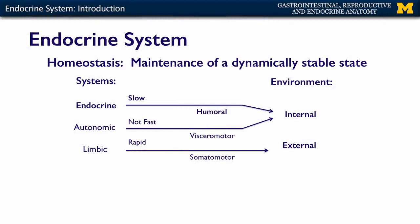In this part of the MOOC, we're going to discuss the endocrine system. The endocrine system is very important in maintaining homeostasis. Homeostasis is, by definition, the maintenance of a dynamically stable state. You're dynamic in that you're changing from moment to moment, but overall you're stable. Your blood pressure isn't going way up or way down, your temperature is not going way up and way down. That's what we mean by homeostasis — a dynamically stable state.